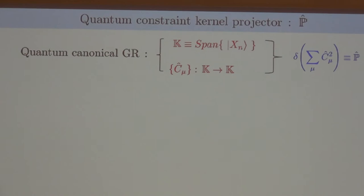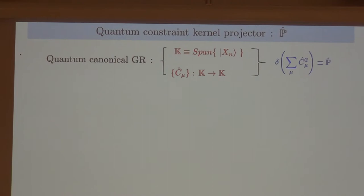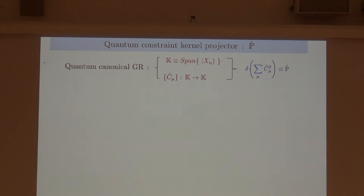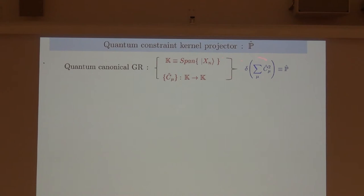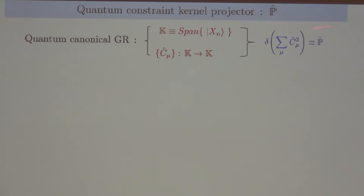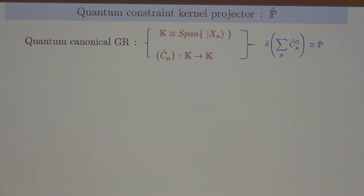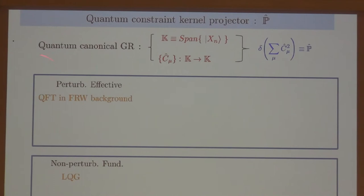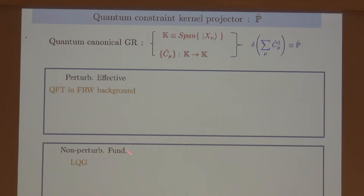In which the momentum and scalar constraints are quantized and to be imposed. So the projector formally is just the delta function of the quantum constraint, which I will call the rigging map. Now, this rigging map serves as a conceptual central object for such theories over a wide range of regimes, from the perturbative effective theories in the low energy scales to non-perturbative fundamental theory in Planck scale.